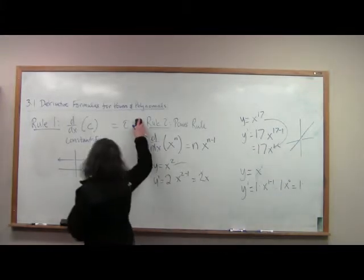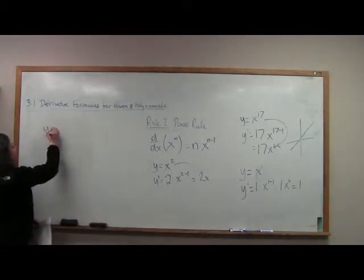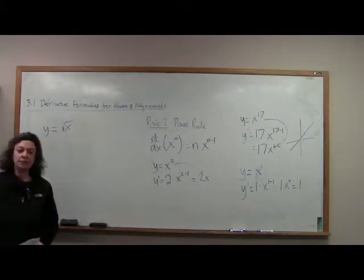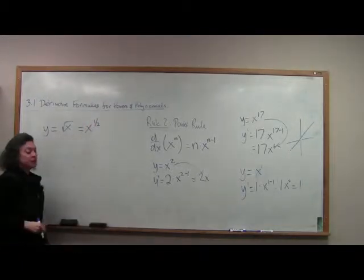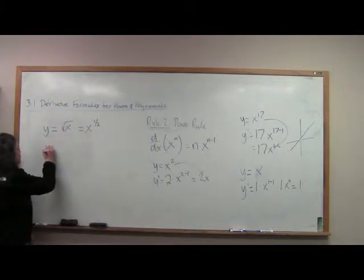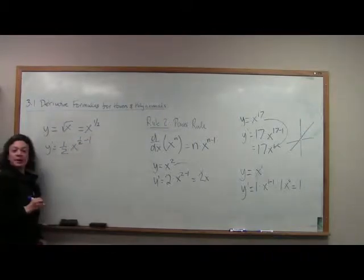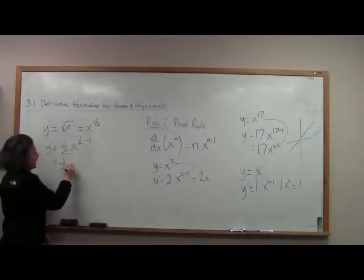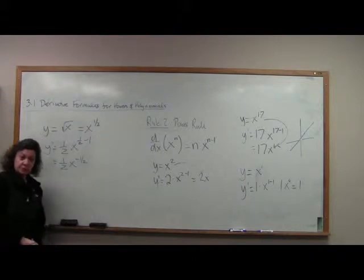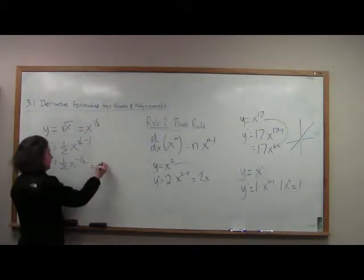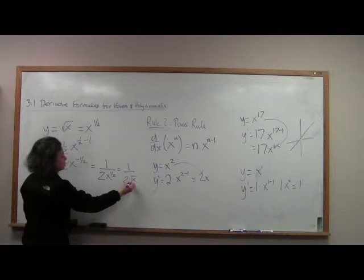What if I have y equals the square root of x? The first thing you want to do is change the radical to a rational exponent — so that's x to the one-half — and then apply the power rule. Bring your exponent down in front and subtract one from your exponent. You get one-half times x to the negative one-half. If you're allowed to leave negative exponents, we've got it. Otherwise, that's 1 over 2x to the one-half, which is 1 over 2 root x.